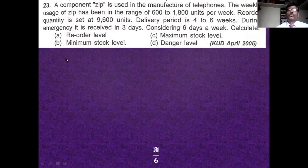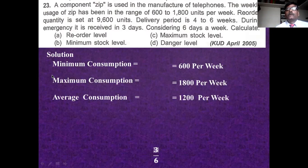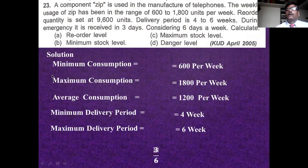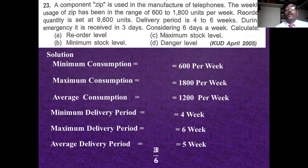Minimum consumption is 600 units per week, maximum consumption is 1,800 units per week, and average consumption is 1,200 units per week. Minimum delivery period is 4 weeks, maximum delivery period is 6 weeks, and average delivery period is 5 weeks. The emergency delivery period is also required to calculate the danger level.